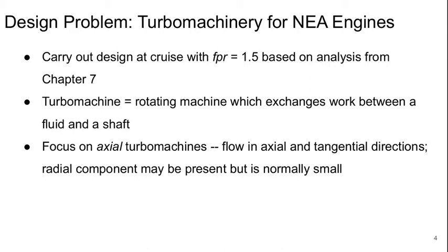So what is a turbo machine? A turbo machine is a rotating machine which exchanges work between a fluid and a shaft, normally via blades. We'll focus on axial turbo machines here, where the flow is primarily in the axial and tangential directions. There may be some radial flow components present, but it's normally going to be pretty small.